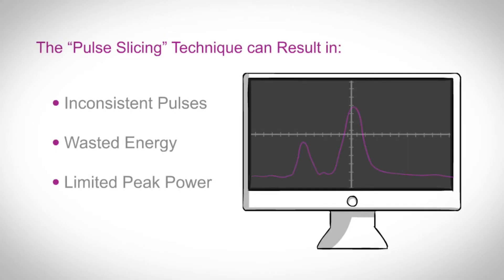Pulse slicing can create inconsistent pulses, waste energy, and limit available peak power.